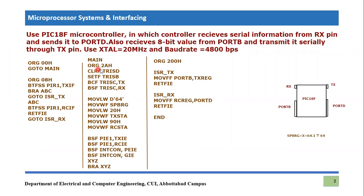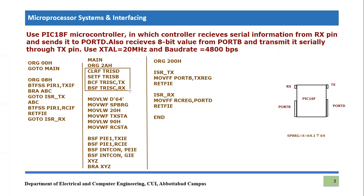In the main program we start at ORG 0x2A. We clear TRISC and setup TRISD, declaring Port B as an input port and Port D as our output port, as required by this application. Then BCF TRISC comma TX makes the TX pin an output, and BSF TRISC comma RX makes the RX pin an input. This section handles I/O port and pin configuration.